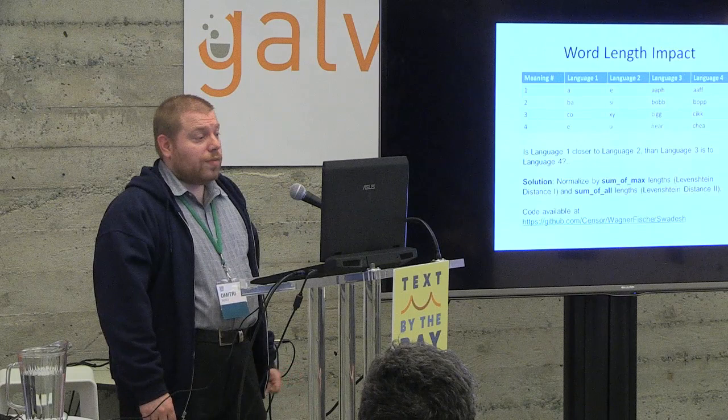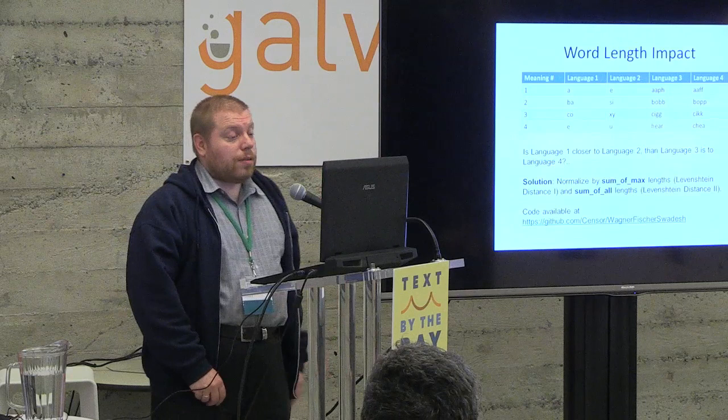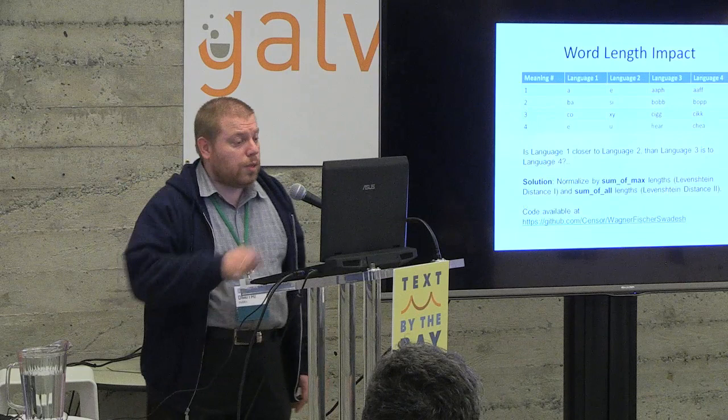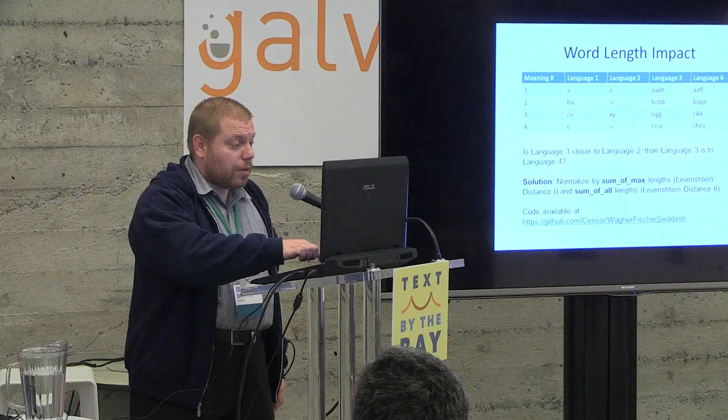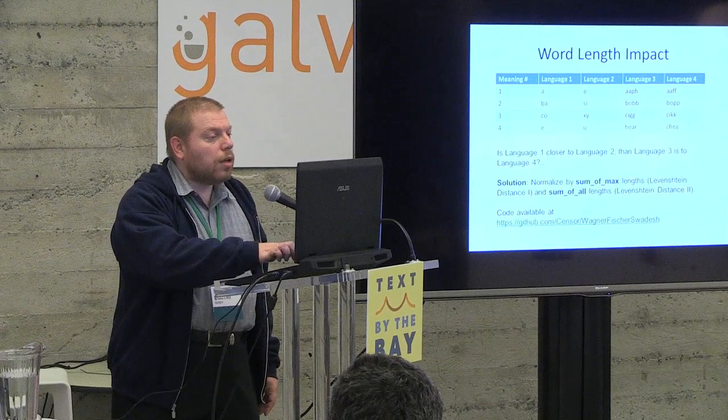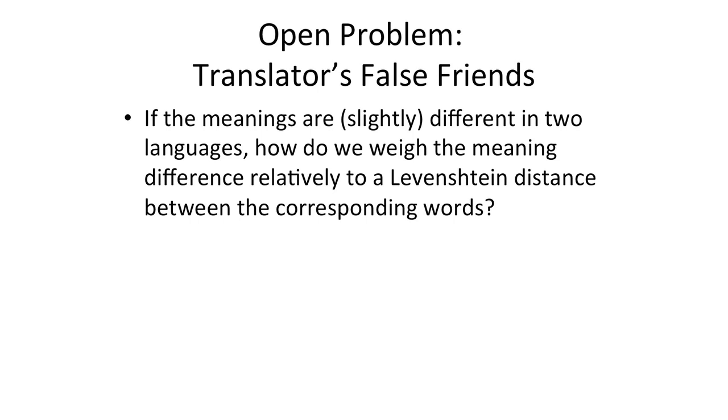That trouble can be removed by normalizing by the sum of maximum lengths of the two words involved for Levenshtein distance one, and the sum of all lengths of the words involved for Levenshtein distance two. The reason we normalize by different things is because in one case we have substitutions, in the other case we don't. The code is available on my GitHub, in a project called Wagner Fischer Swadish.